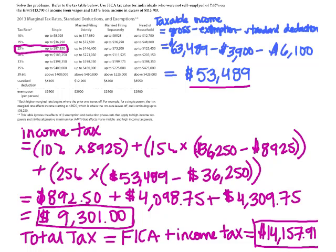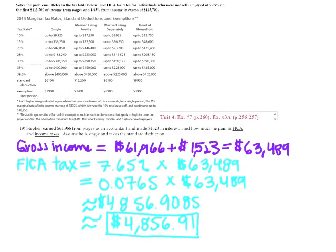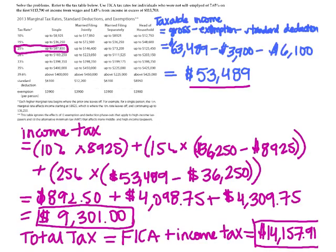To summarize problem 19: start by calculating gross income, then calculate the FICA tax by multiplying the FICA rate by gross income. Next, calculate taxable income by subtracting exemptions and standard deductions from gross income. Then calculate income tax using the taxable income and tax brackets. Finally, add FICA tax and income tax together to get the total tax.